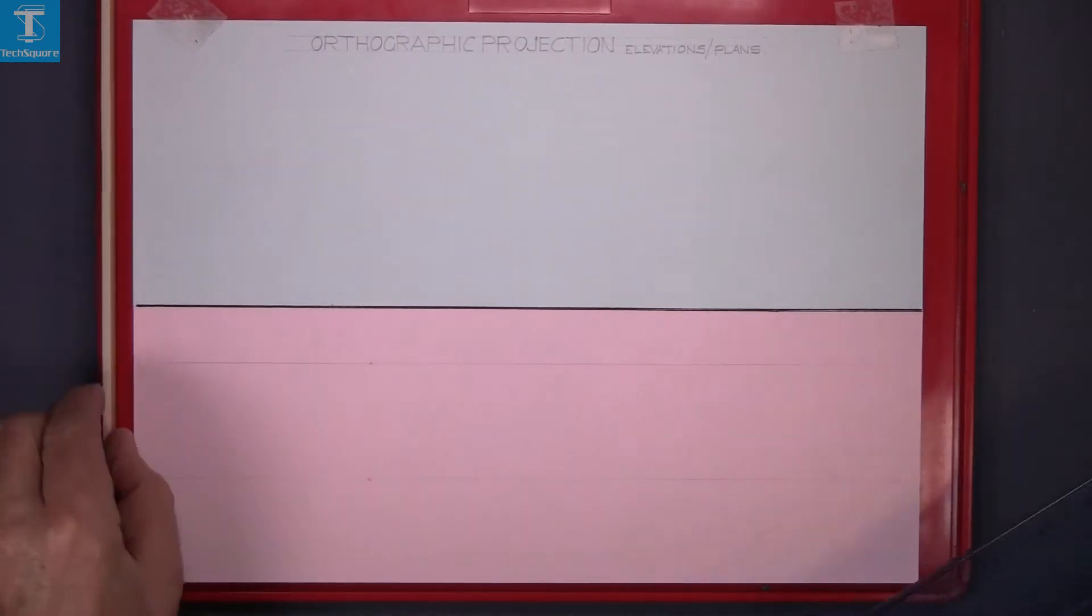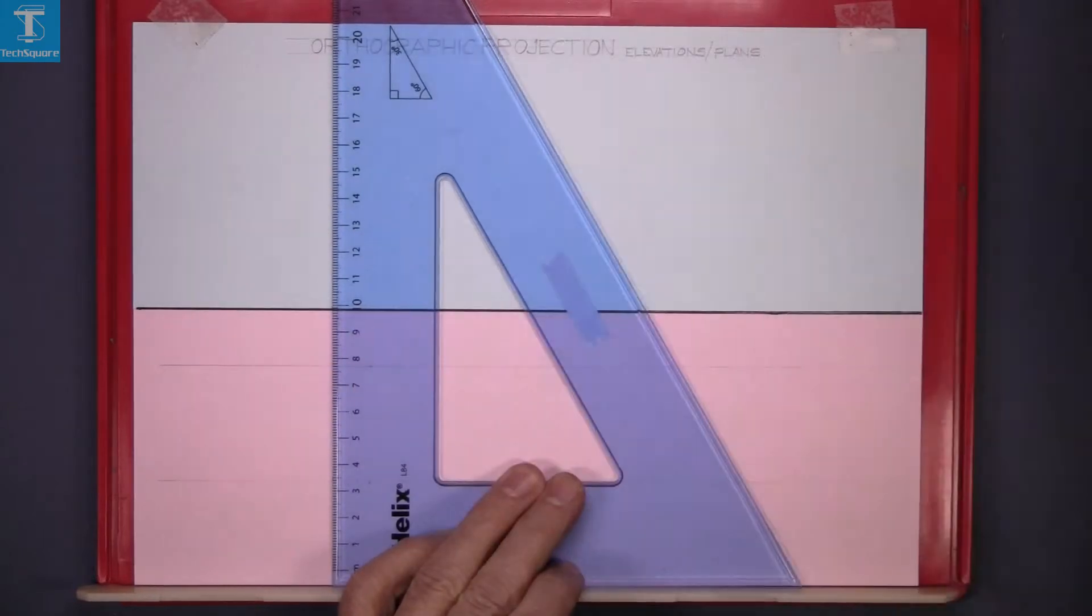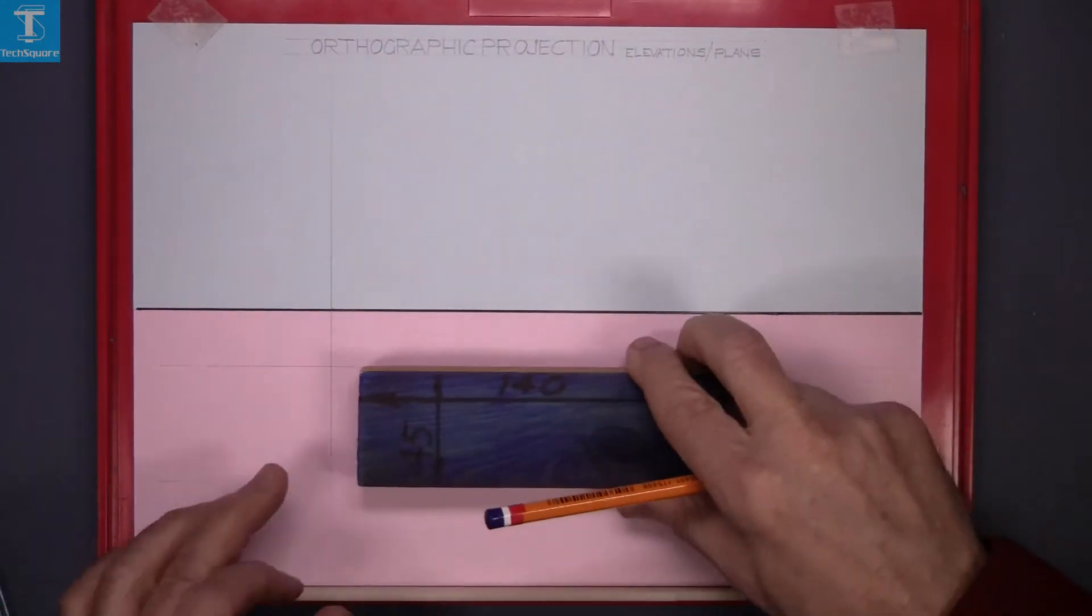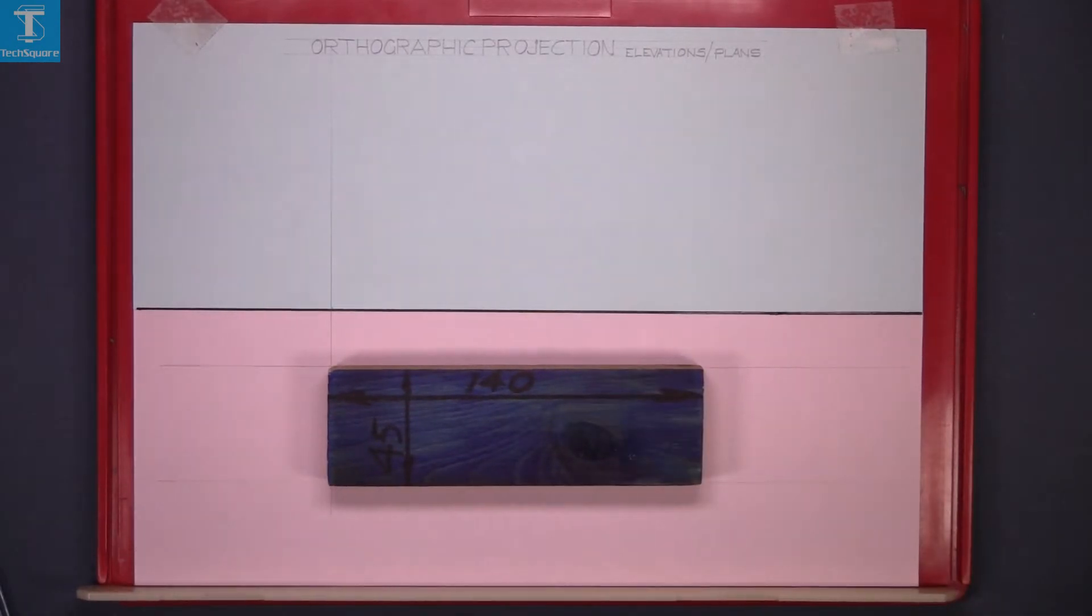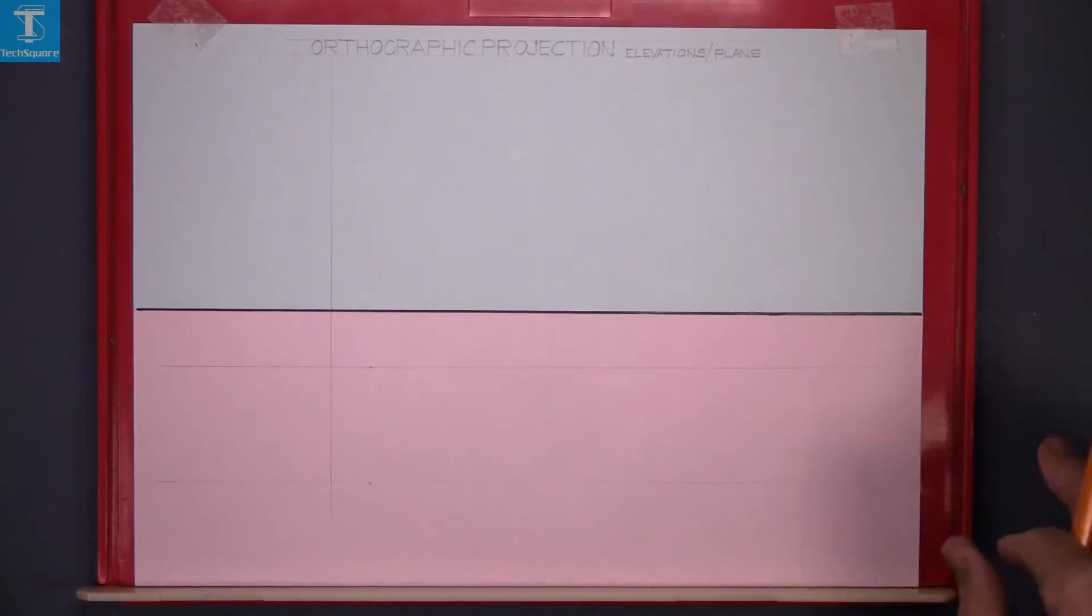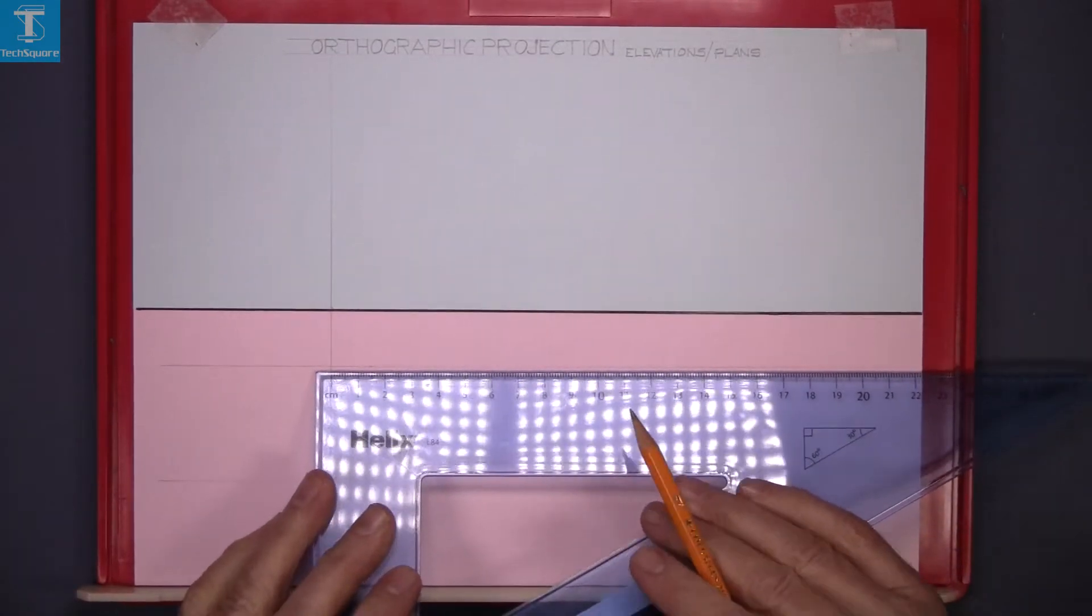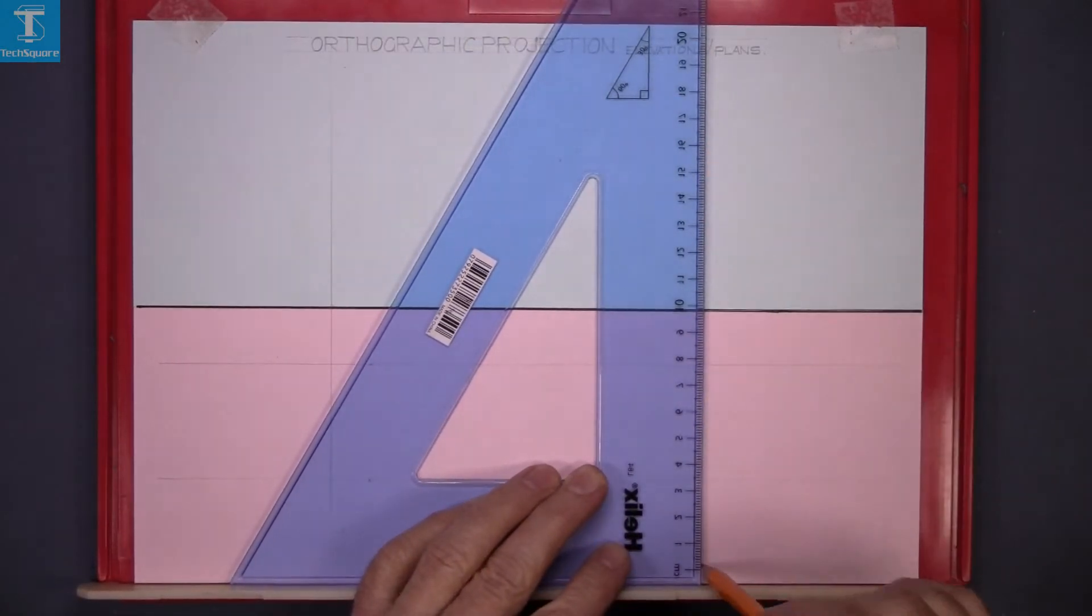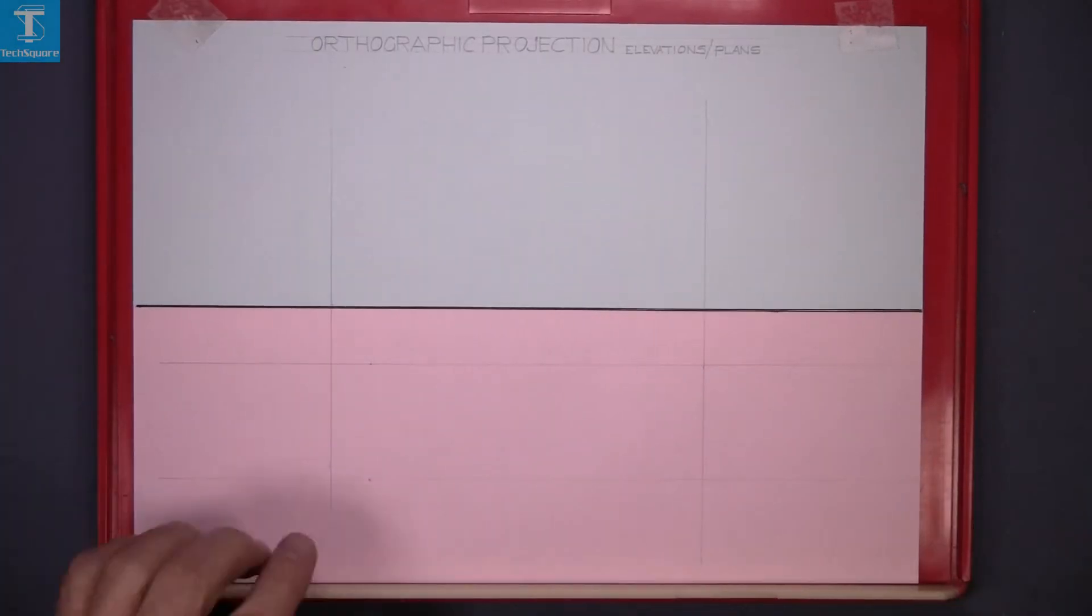Now decide where to put the end of the piece - it can be anywhere. Draw a vertical line. That's the end of the piece and where it's going to sit. That's where the plan will be. It's 140 long, so measure over 140 and draw the other end line. Draw a light line the full height of the sheet.